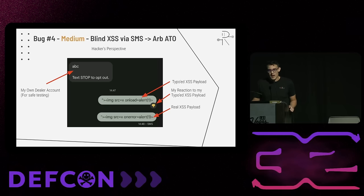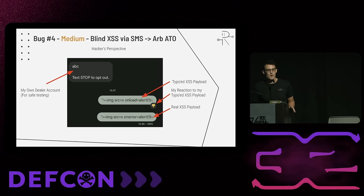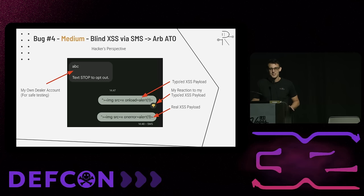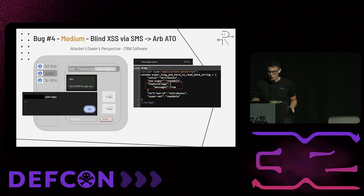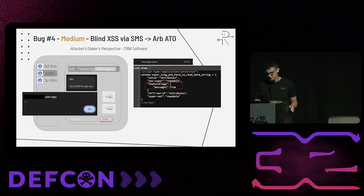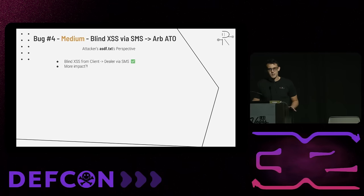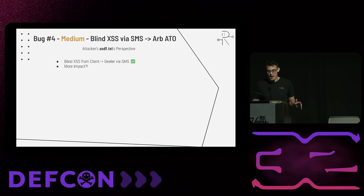We have the ability to send messages to various leads — it'll go to the phone number they submitted. I sent myself a message after submitting a lead, and thought: wouldn't it be cool to SMS myself an XSS payload? I first typoed the XSS payload to something that would never work, then submitted the actual XSS payload. When the dealer came back to the screen, they would see the XSS pop. We were able to get a blind XSS of sorts. But what can we do with it to get more impact?